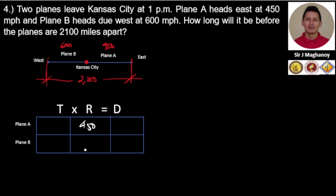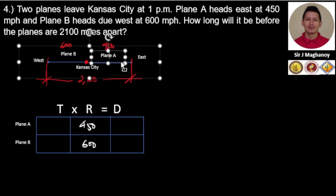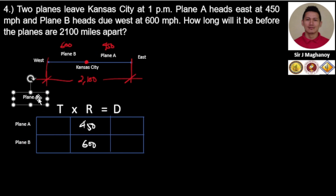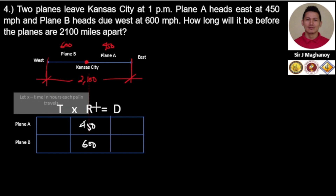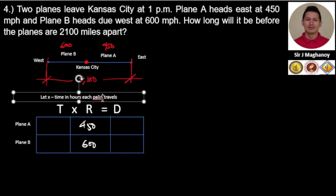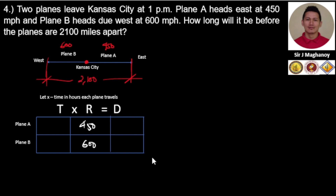Plane A has a speed of 450 miles per hour and Plane B has a speed of 600 miles per hour. For our time, we let X be our time in hours for each plane traveled.